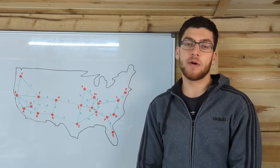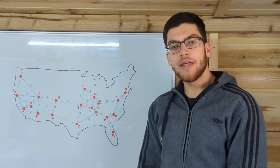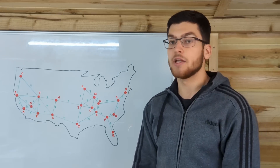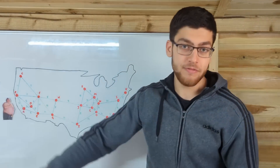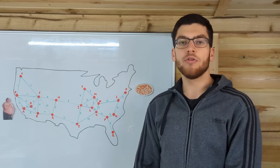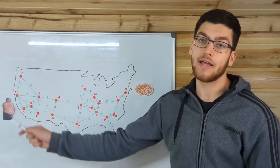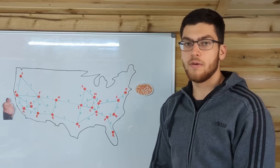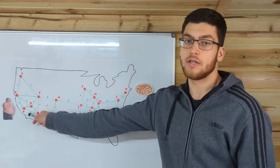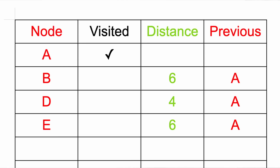Dijkstra's algorithm works by focusing on only the shortest path — everything else is ignored. So let's say we have a man in Los Angeles. He used to be vegan, but he recently discovered that he's a big fan of New York. He wants to find the quickest route to New York City and back. Let's have a look at his options. The man's starting here at Los Angeles, so he could go to B, D, or E.